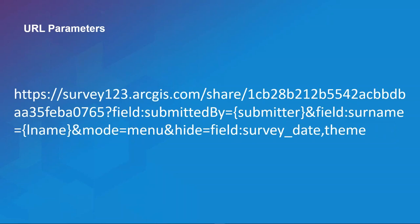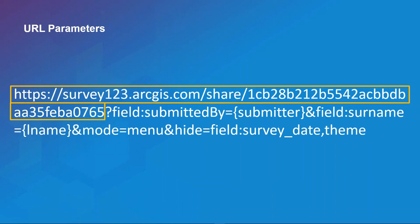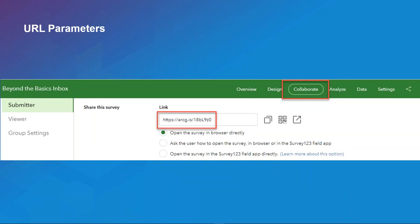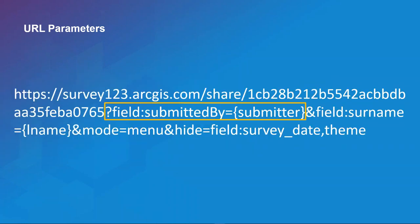You can also harness URL parameters in Survey123 to pass values to a web survey specifically for use within a web browser. This can be helpful for desktop workflows that don't require your team to be in the field. You'll use the HTTPS protocol pointing to the item ID of the form from the Survey123 website's share section. After the question mark, we begin passing parameters — for example, passing a dynamic value from a web map called 'submitter' to the field 'submitted_by' in our survey.